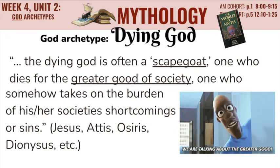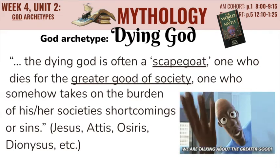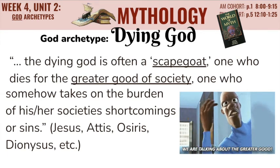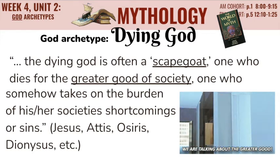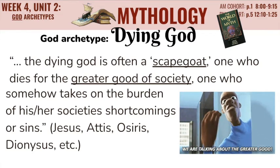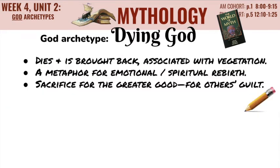The dying god is also a scapegoat — one who dies for the greater good of society. They often take on the burden of their society's shortcomings or sins. We see this in gods like Jesus, Attis, Osiris, and Dionysus. To review: this god dies and is brought back in some way, and they're associated with vegetation, just like the cycles of crops dying each year and coming back the next season. It can be seen as a metaphor for emotional and spiritual rebirth, and as sacrificing for the greater good — dying so that others' guilt can be erased.